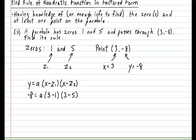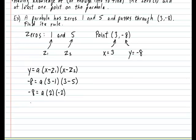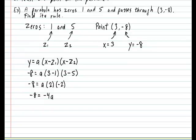The rest becomes straightforward algebra. So let's simplify the expression first. We have -8 equals a multiplied by (3 minus 1 is 2) multiplied by (3 minus 5 is -2). Let's clean up just a little bit more. We have -8 is equal to 2 times -2 is -4 times a. And let's finish isolating the a by dividing both sides by -4. So we end up that our a value is 2.